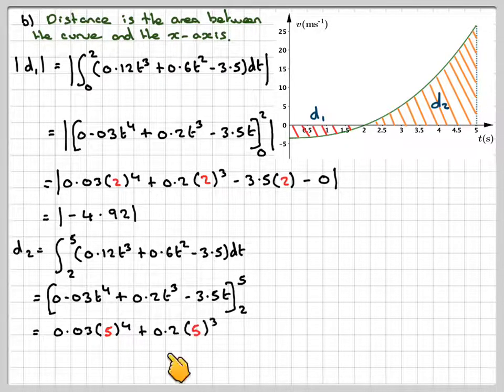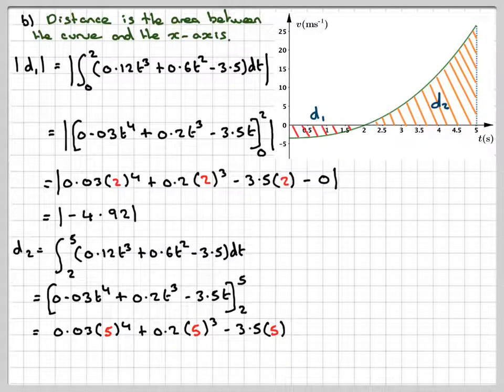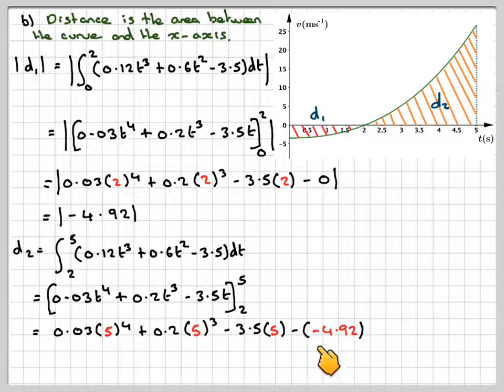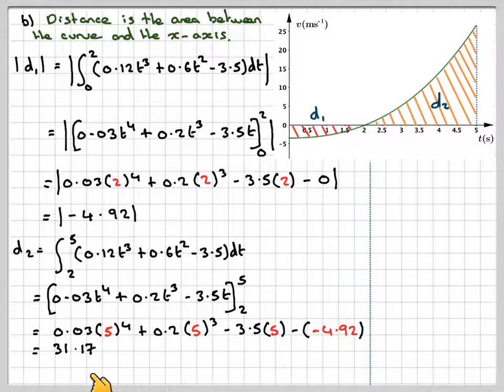That is going to be equal to 0.03 times 5 to the 4 plus 0.2 times 5 cubed minus 3.5 times 5 minus this one here with the sign here. So minus, be careful with the minus signs, minus 4.92. If we work that out on a calculator, we're going to get 31.17.